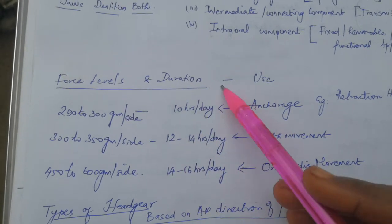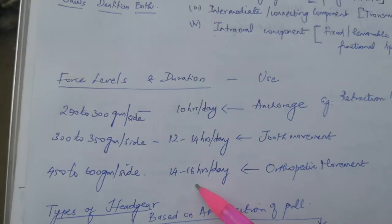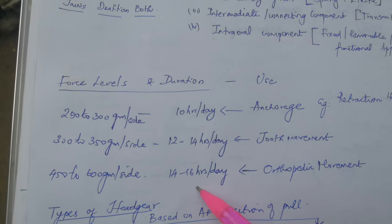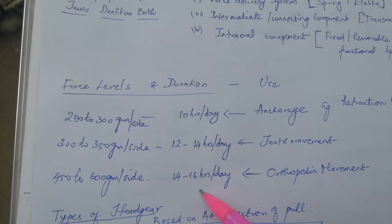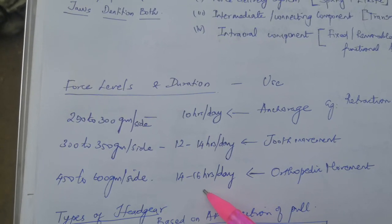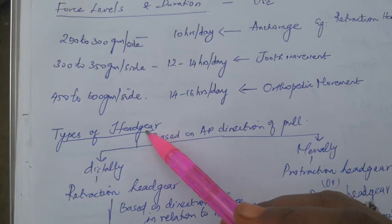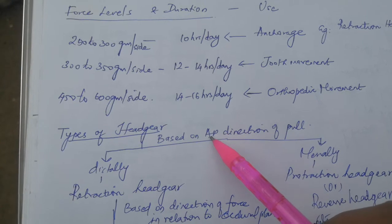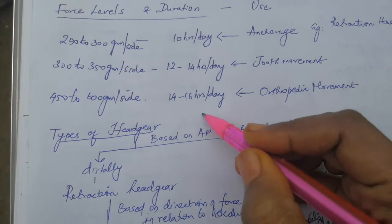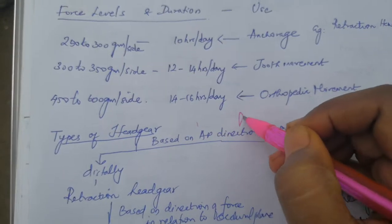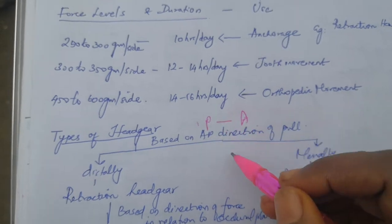If this compliance is not achieved through the patients, then reversal of biomechanics will happen. What are the types of headgear based on the anteroposterior direction of pull?